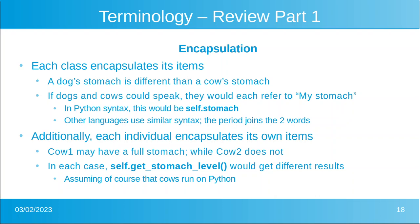Each individual encapsulates its own items. If we had two cows and asked each cow how full their stomach was, maybe one cow says it's full and the other says it's half full. In each case, that cow's brain would be running a procedure similar to self.get_stomach_level, and each cow would get a different result — assuming, of course, that cows' brains run on Python.